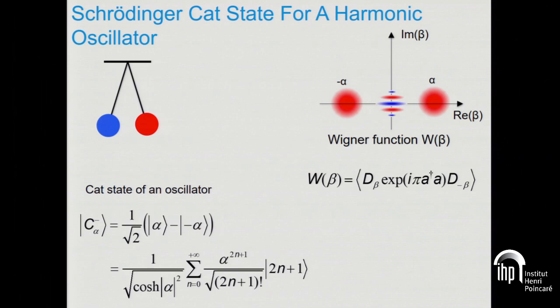You can also flip this sign and get a minus sign here. Now it's the odd photon number states which are populated, and if you look at the two Wigner functions, the difference is simply that the fringes have changed sign.